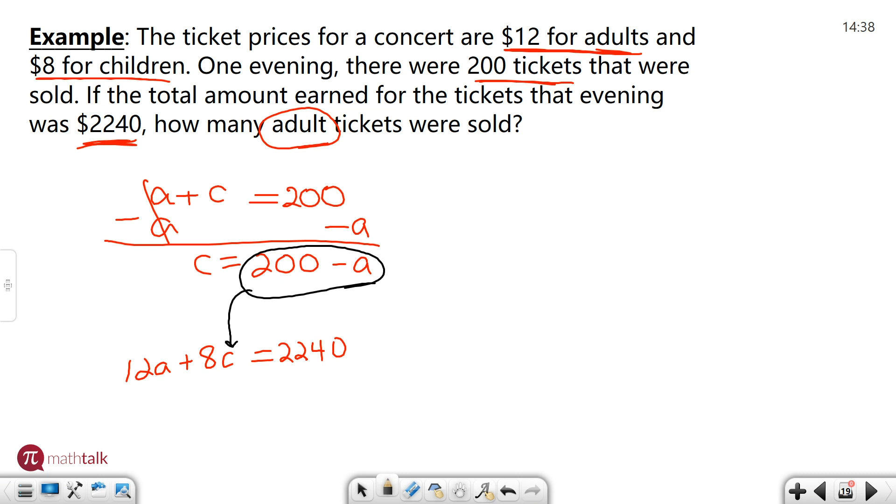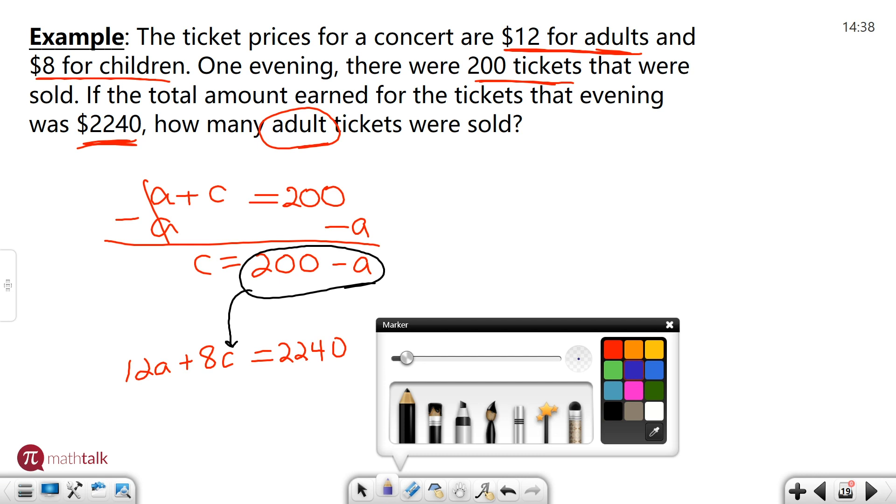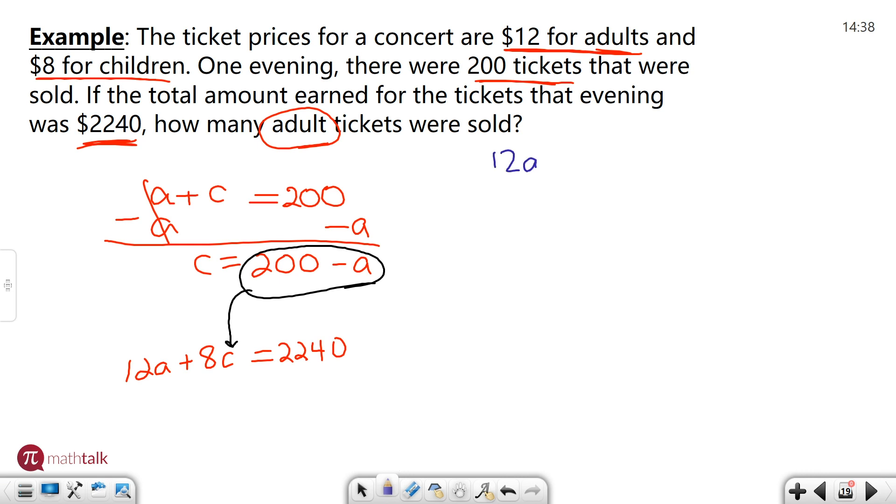So let me go ahead and plug that in and we can start solving this equation. So 12A plus 8 times C. Instead of C I'm going to write 200 minus A because it's the same thing. They're equal to each other so I can replace one with the other. And that's all going to equal 2240.